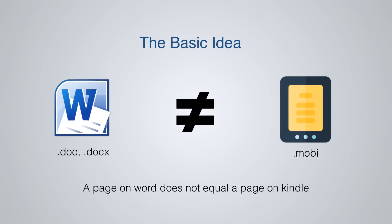The first basic concept I want to cover is that what you see in Microsoft Word does not equal what you see on the Kindle. In Word you see an A4 page, but that A4 page does not translate one-to-one to the Kindle format. There are many Kindle e-readers — the Kindle Paperwhite, the Kindle Fire, the Kindle app for smartphones, iPads, and even a web app on desktop — so your book will be consumed in many different ways.